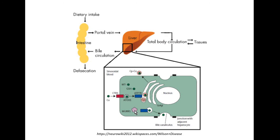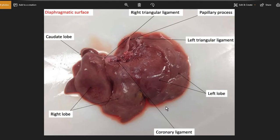In the event there is a mutation in MURR1 protein, this results in copper accumulation inside hepatocytes, which results in generation of free radicals and lipid peroxidation of cell membranes, which eventually results in cell death.